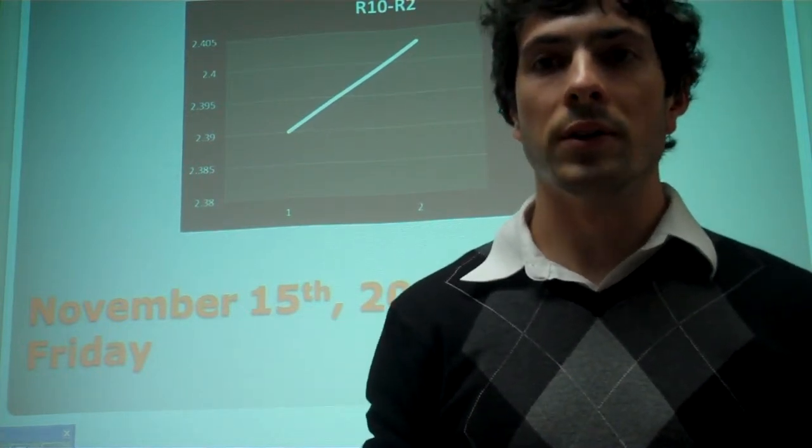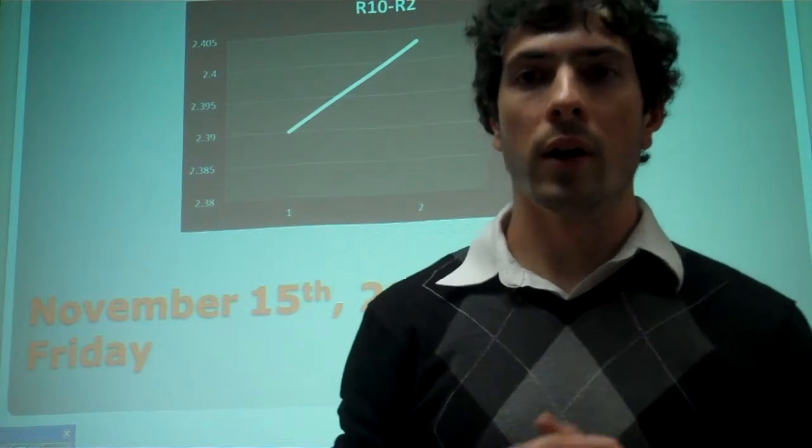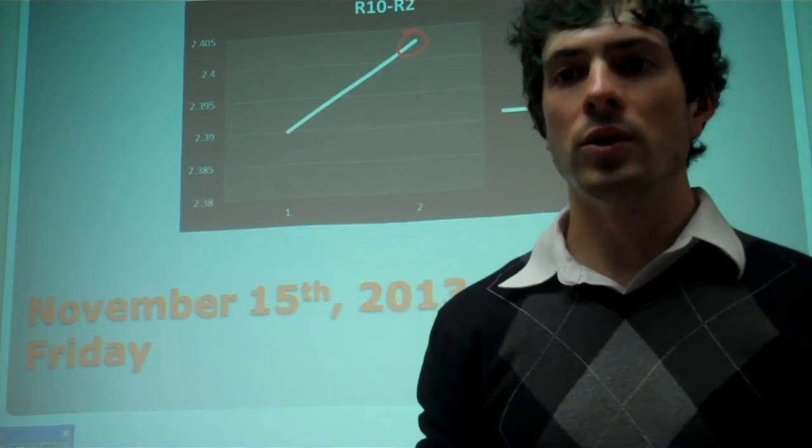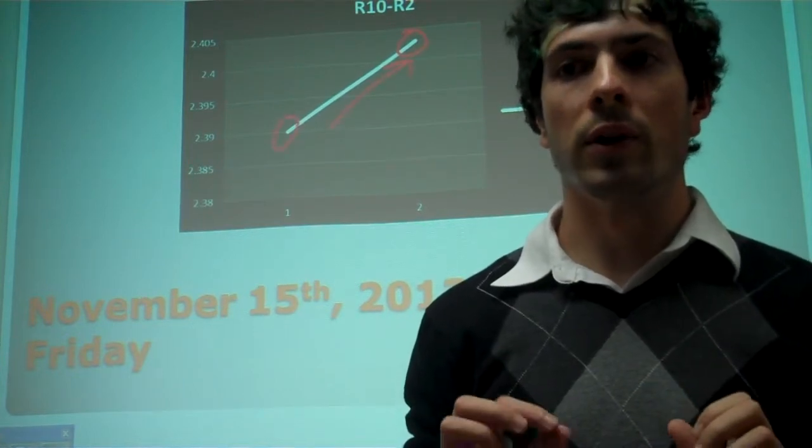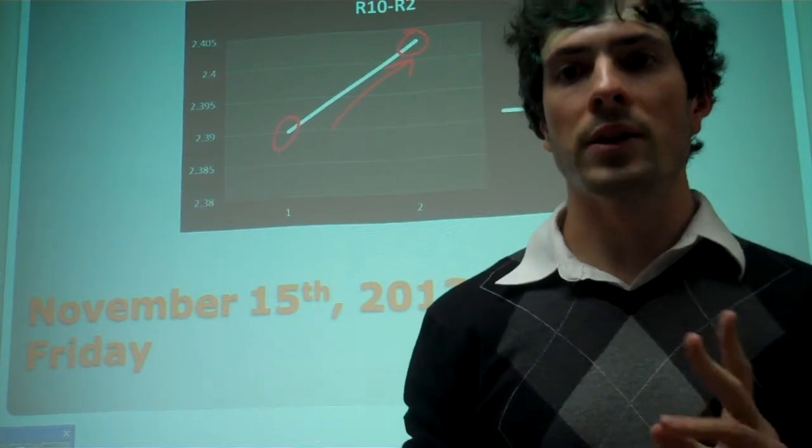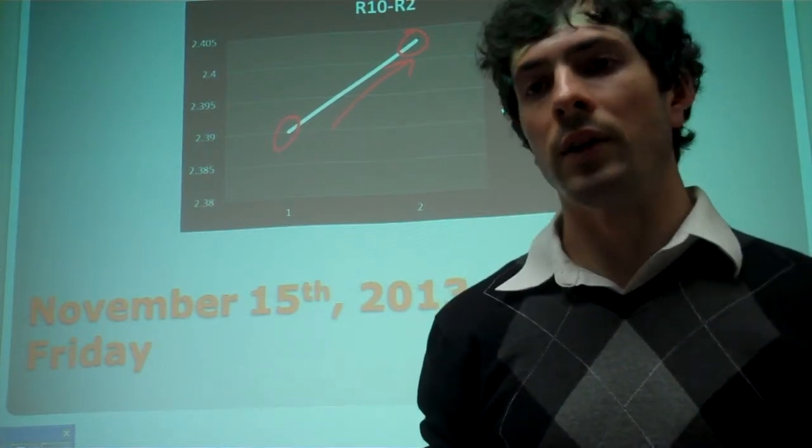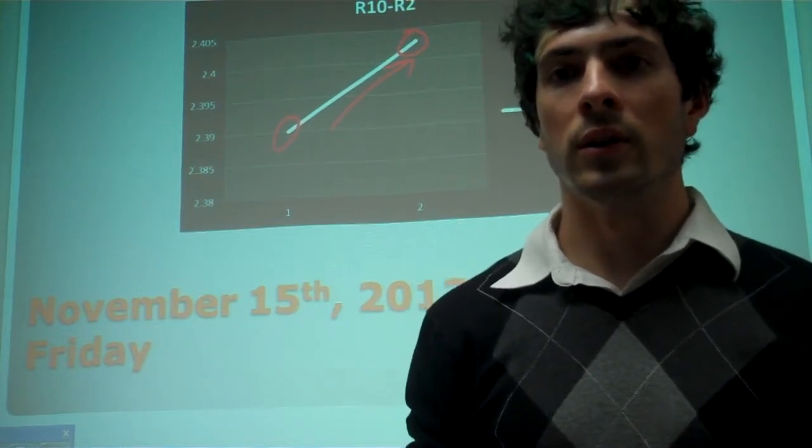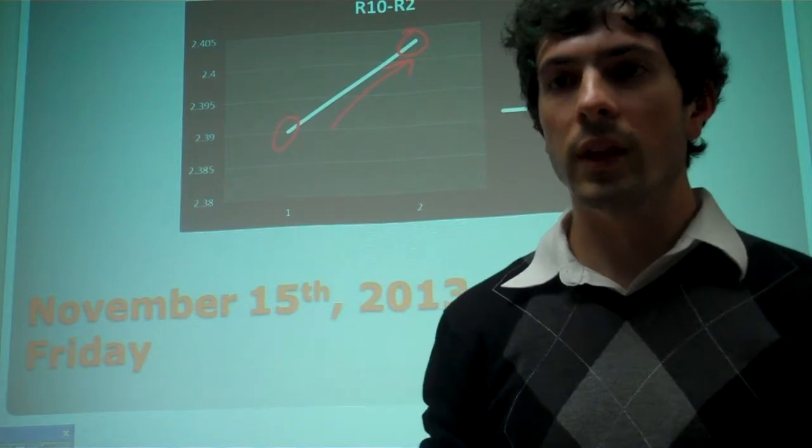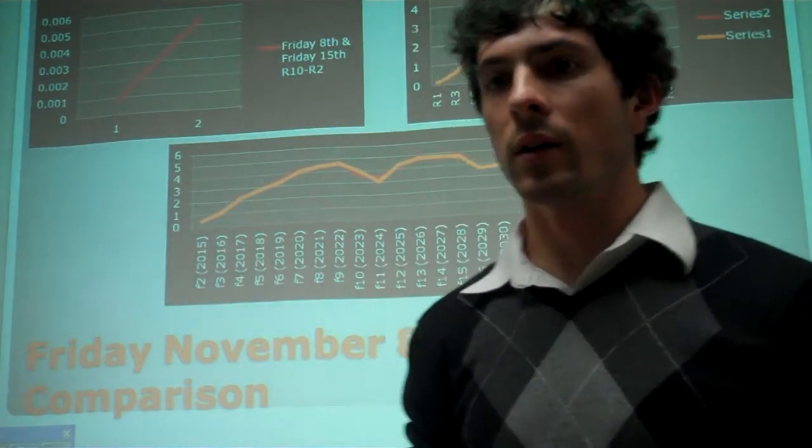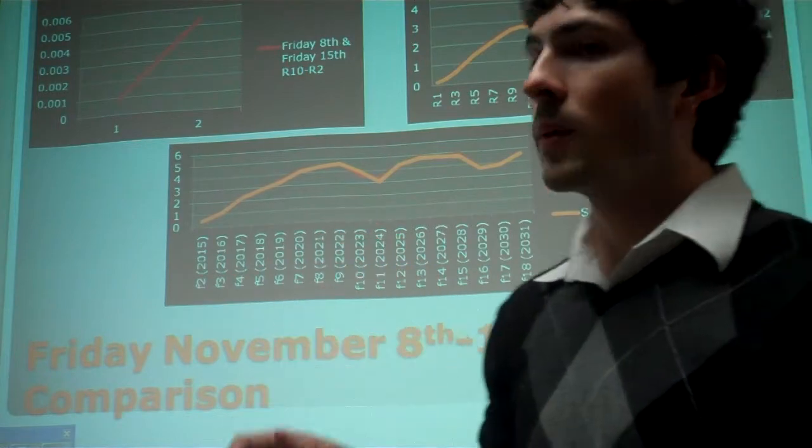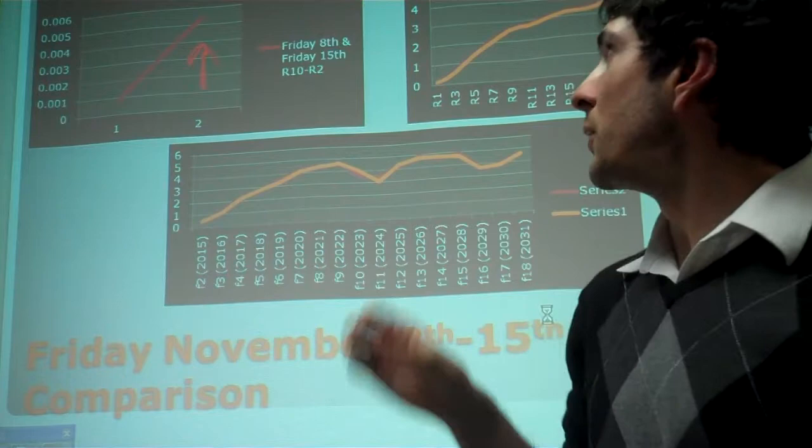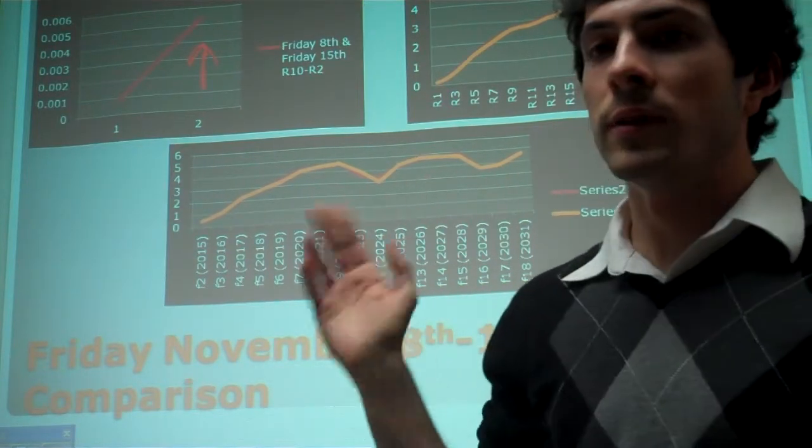Thursday's R10 to R2 difference is 2.39 and Friday is 2.403. The percentage change equation states it to be 0.00544, the positive number indicating a steepening in the yield curve. This correlates with the news that the 10-year Treasury yield is rising. As you can see in the R10-R2, there is an increase in the slope. And also, this is for Friday. The comparison from Friday the 8th to Friday the 15th.